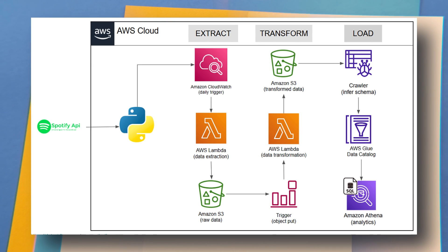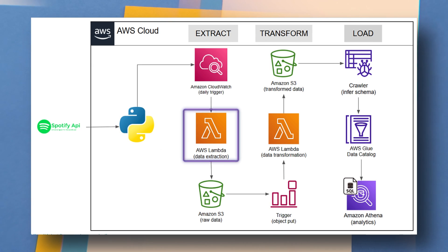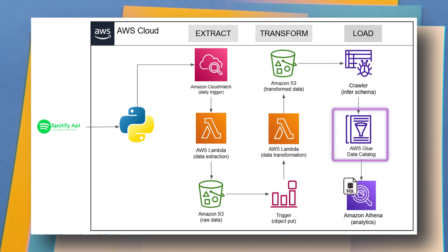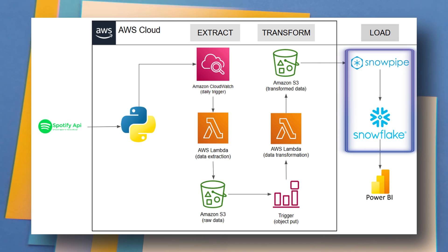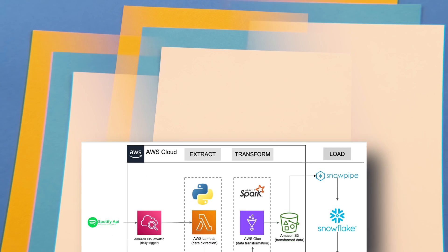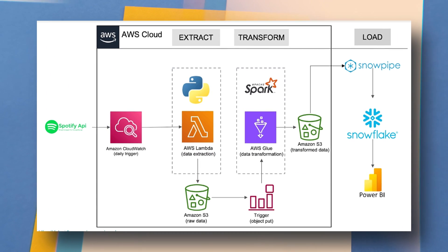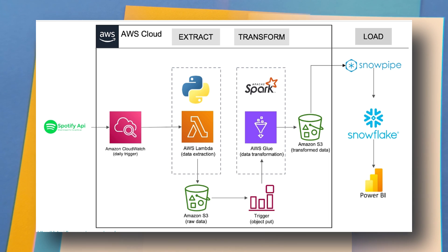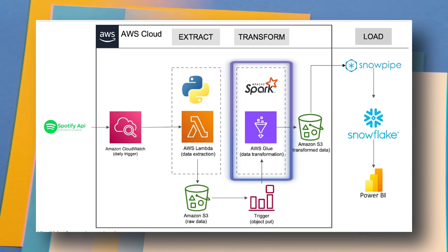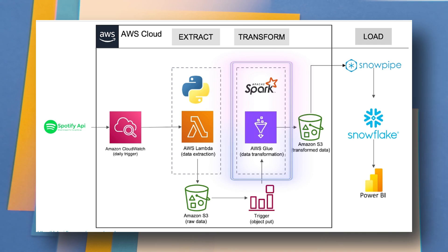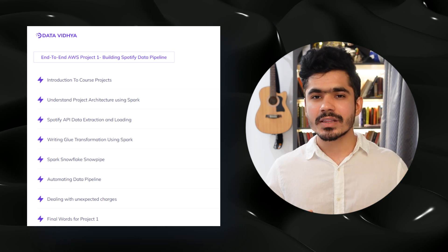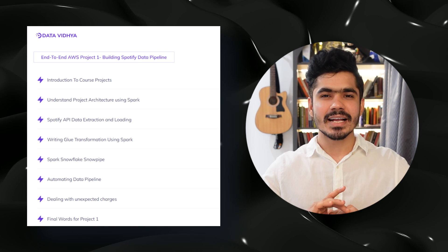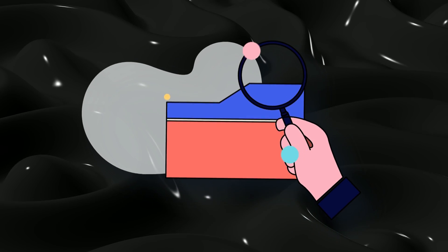In the data warehouse Snowflake course we replaced the load layer with Snowpipe and the Snowflake database. In this Apache Spark course we will replace the Lambda function transformation logic with Apache Spark on AWS Glue. You will understand how to write Spark code on AWS Glue, write everything from scratch, and then automate the entire pipeline from fetching data all the way to loading it into the Snowflake database with all transformations in between.